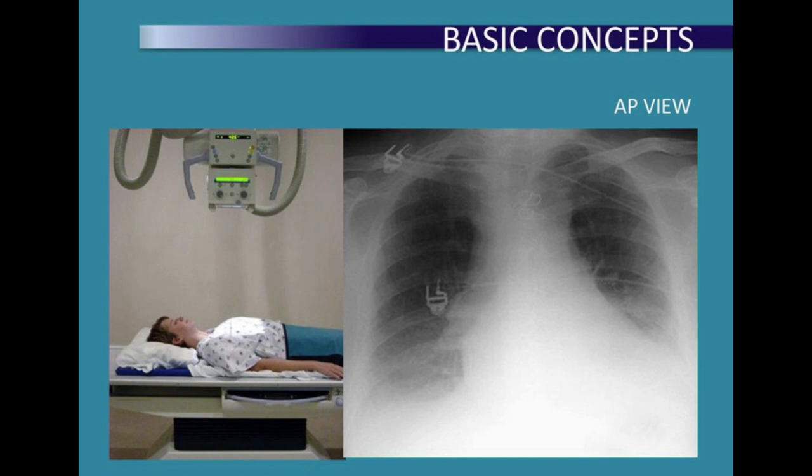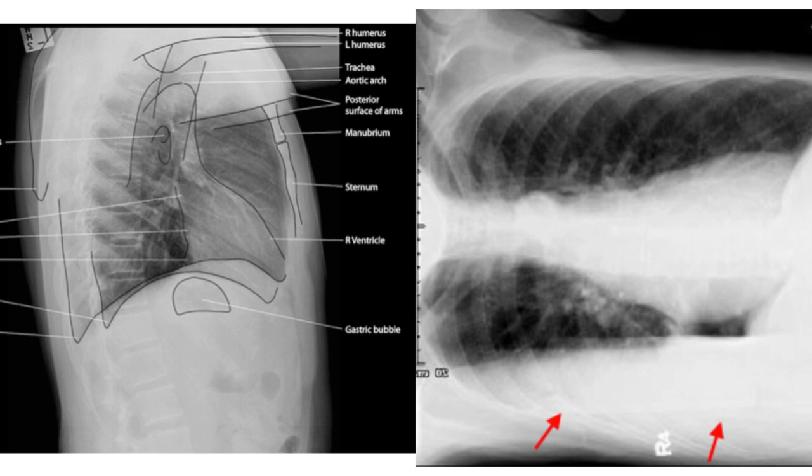This is because the AP view may result in magnification of the heart, leading to potential errors in assessing heart size and lung fields. In addition to the standard PA and AP views, there are other specialized positions, including the lateral view and decubitus view.